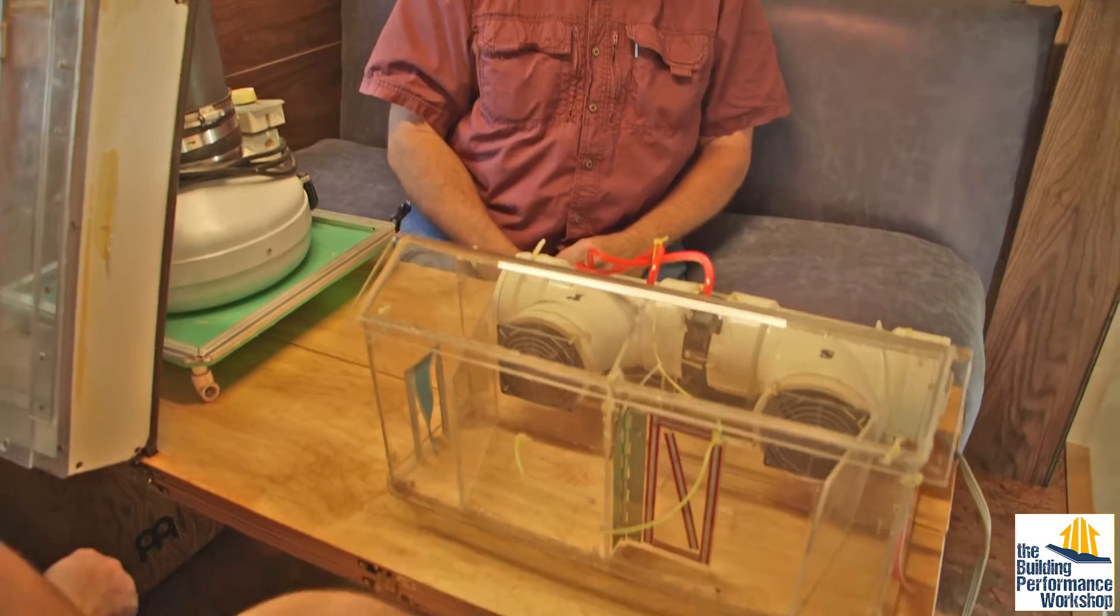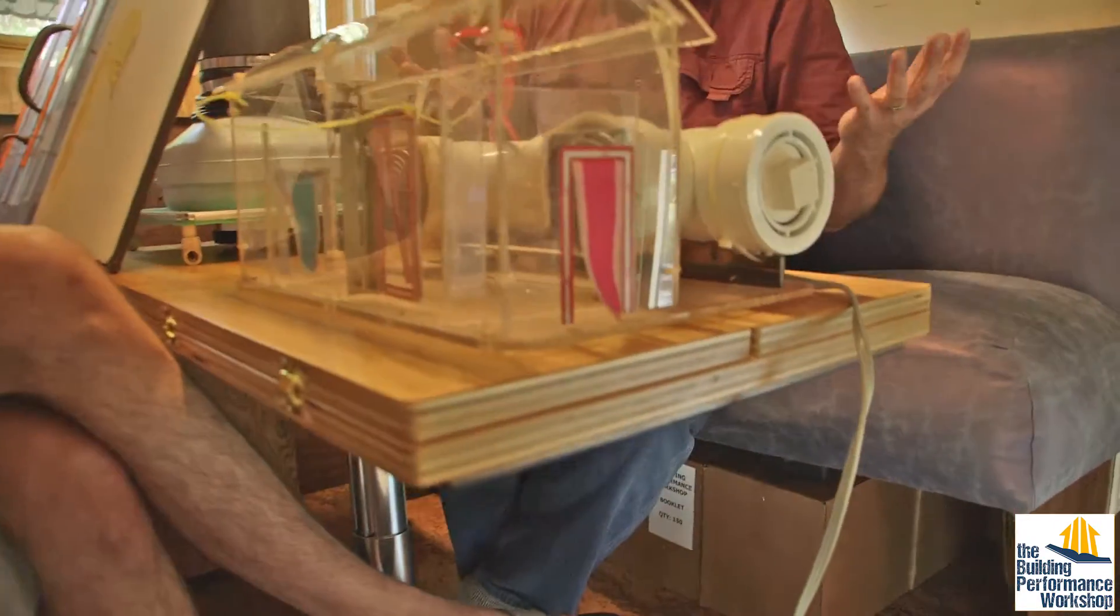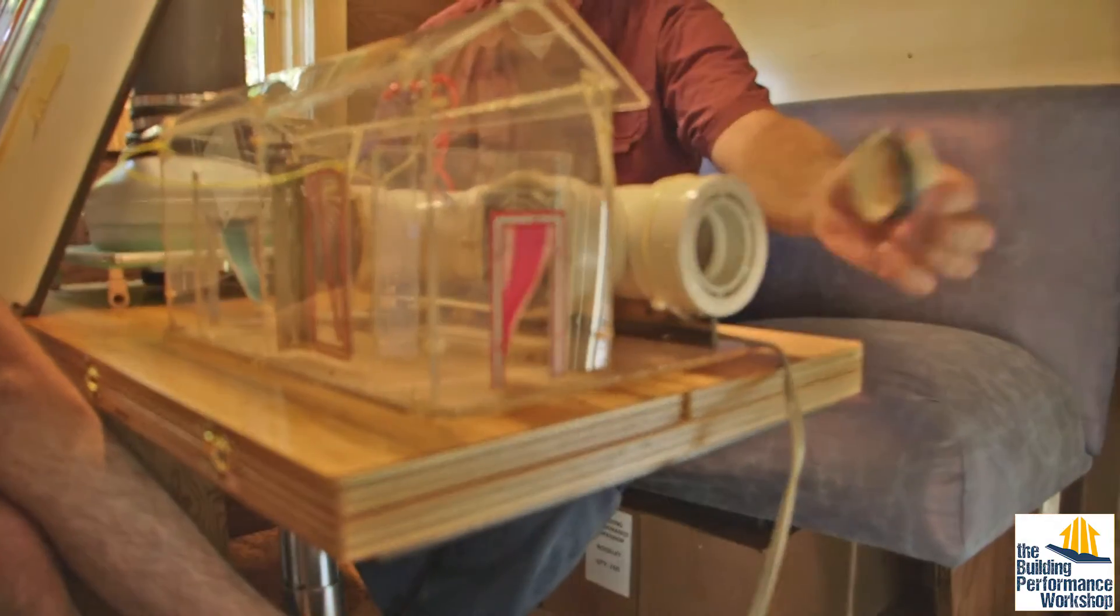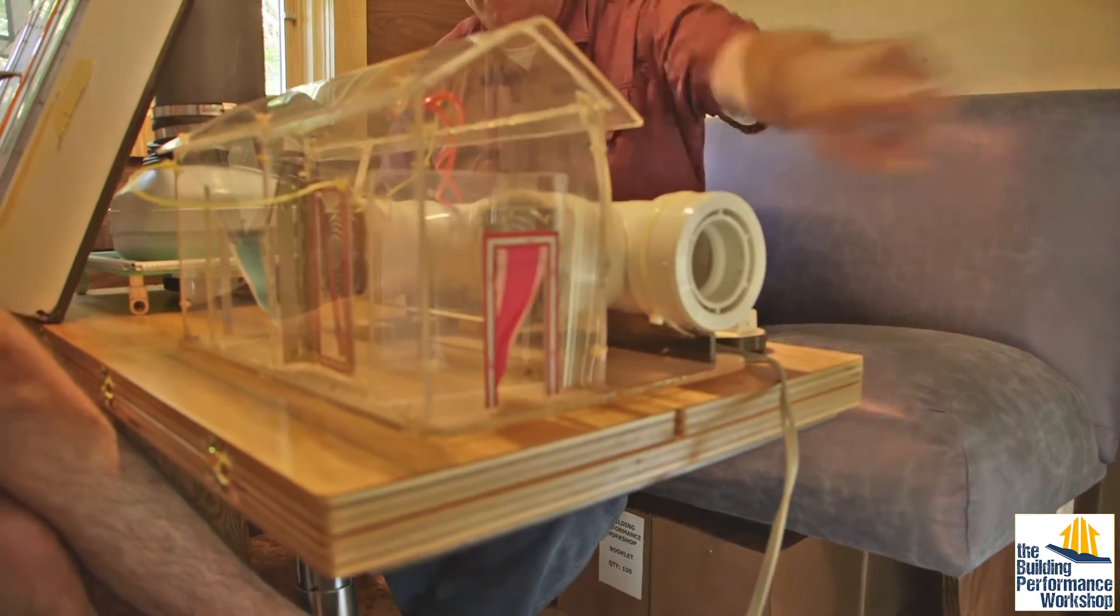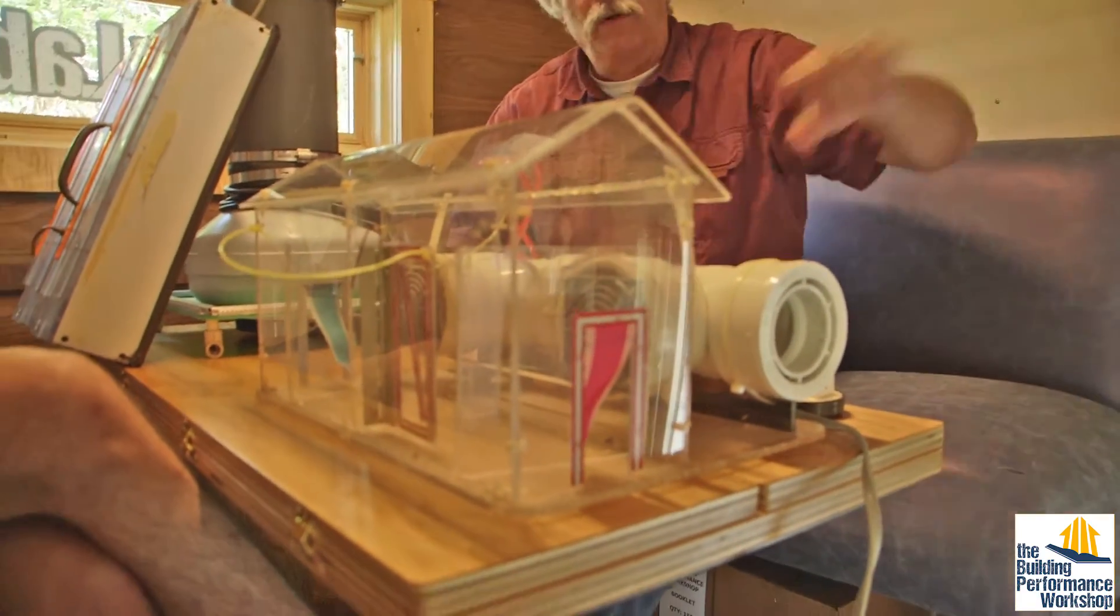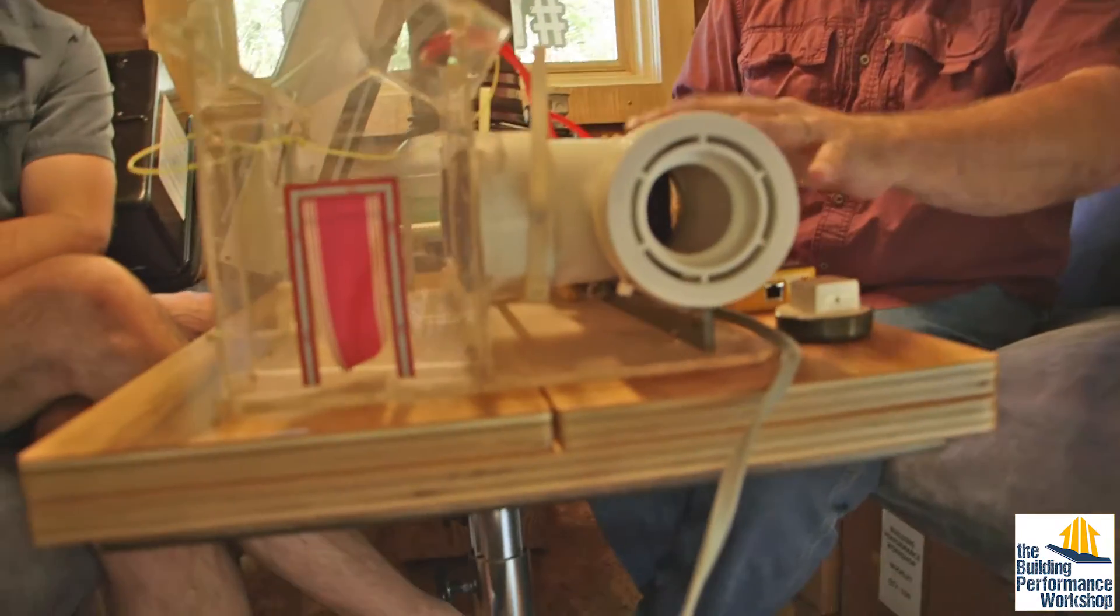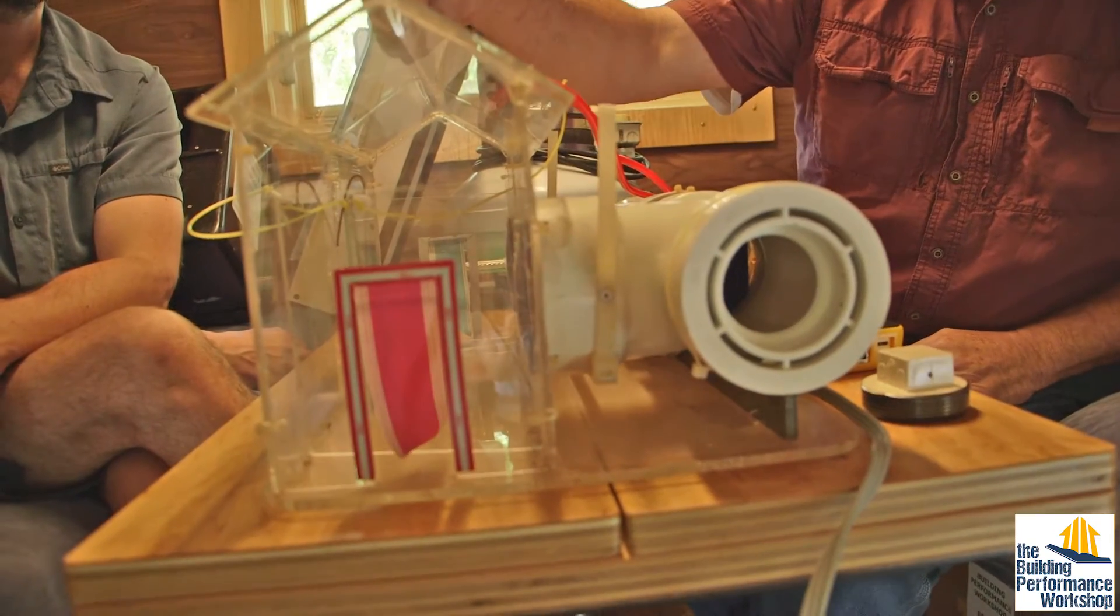And real houses, same thing. The other leak that we have is a supply leak. So let me add a supply leak. Now I'm taking this air-conditioned air, and I'm blowing it to the outside. Or I'm blowing it into the attic. Or I'm blowing it into the crawl space, depending on where this duct and its leak is located.